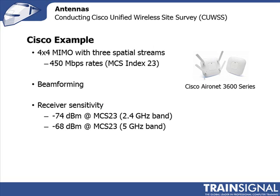Here's a Cisco example of their 3600 series access point, which they call a 4x4 MIMO. But if you look at it — and this is why I showed you that chart earlier — when you configure it, it goes up to a modulation coding scheme index of 23, not 31. So the maximum data rate is 450 Mbps. What that means is it's not transmitting on four antennas; it's receiving on four antennas, likely transmitting on three. So it is 4x4 MIMO in the sense of four antennas used for receiving.